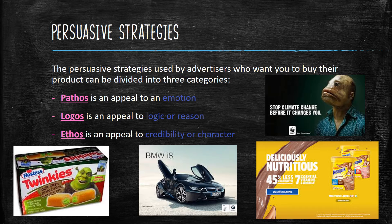The first one is pathos, which is an appeal to an emotion. So it would be an ad that makes you feel really happy or really sad or really angry — it'll make you feel something.